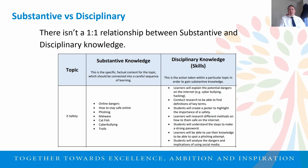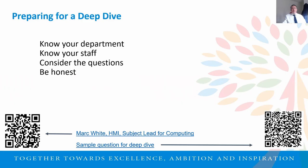One of the things worth acknowledging, and part of the work we've been doing at the Trust, is that there isn't a one-to-one relationship between substantive and disciplinary knowledge. It's not the case that one piece of substantive knowledge equates to a singular piece of disciplinary knowledge. It's quite often the case that multiple pieces of substantive knowledge — multiple rules and facts — create a singular piece of disciplinary knowledge, and there can be overlap and interdependencies between them as well.